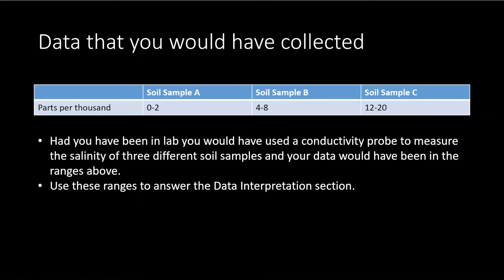In this lab, you would have taken a probe, stuck it into a solution of soil mixed with some salty water, and taken measurements in parts per thousand. You would have had a soil sample for A between 0 and 2, for B it would have been 4 to 8, and C would have been 12 to 20, somewhere in those ranges. Please fill in these actual values in your lab and use these ranges to discuss whether it's a high or low salinity and what effects that could have.